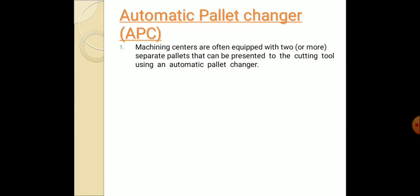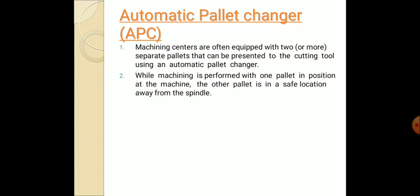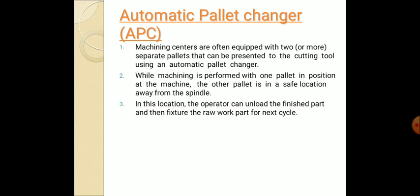Next one is automatic pallet changer. In the automatic pallet changer we can see the machine centers are often equipped with two separate pallets. The pallet is a storage device which can store the finished products or the required tools that need to be mounted on the tool post. While machining is performed with one pallet in position at the machine, the other pallet is in the safe location away from the spindle. In this location the operator can unload the finished part and then fixture the raw part for the next cycle.